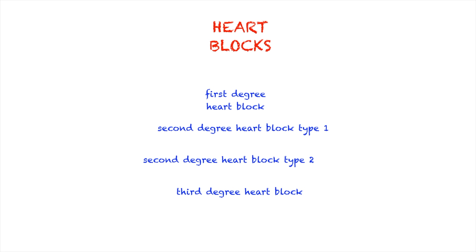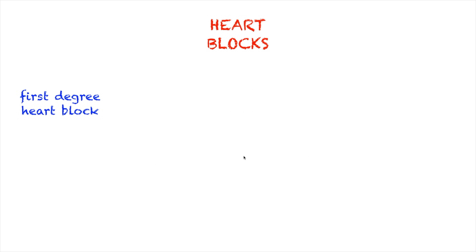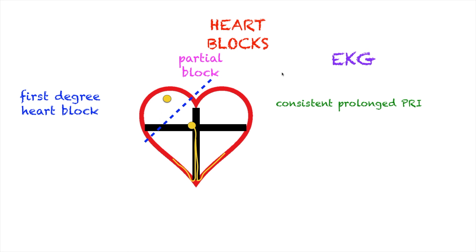There are four types of heart blocks, and we're going to talk about them one by one and emphasize specific characteristics about them. First up: first degree heart block. In your first degree heart block, there is a partial block between your SA node and your AV node. It is partial because even though there's a block here, the impulse still goes through all the way to the Purkinje fibers. There is a delay somewhere here, but it still goes all the way. In our EKG, this will cause a consistent prolonged PRI, or PR interval. Note the word consistent.